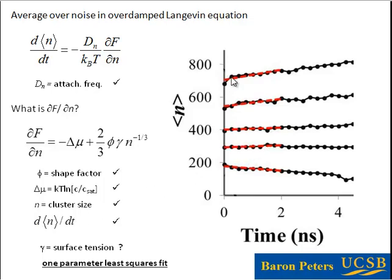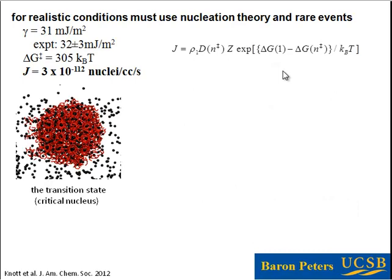The data represents average size evolution as a function of time starting from some initial condition. We take everything we know and do a least squares fit on this data, with the interfacial free energy parameter as the one unknown. There should be a single value of the interfacial free energy that matches all of the different curves — those going in different directions. That gives us 31 millijoules per meter squared. Experimental estimates of the interfacial free energy for methane hydrate in contact with aqueous solution are 32 millijoules per meter squared. This precise alignment is an indication that we're doing something right, though it also involved some luck.